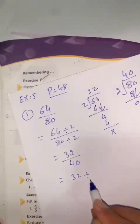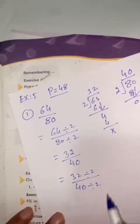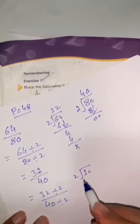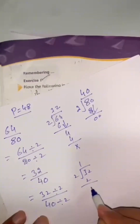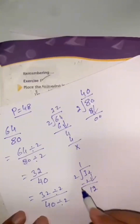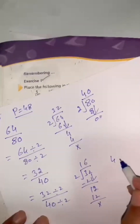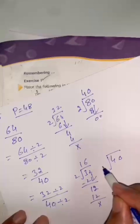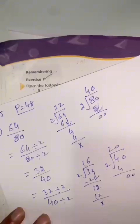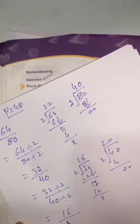32 divided by 2 and 40 divided by 2. So 32 divided by 2: 2 ones are 2, and 2 sixes are 12, giving 16. Now 40 divided by 2: 2 twos are 4, 0 zero, so 20. So we get 16 divided by 20.